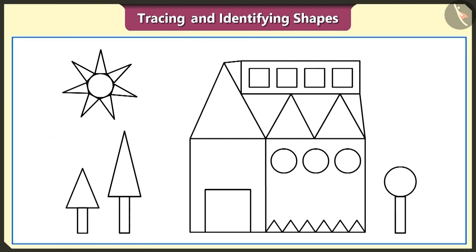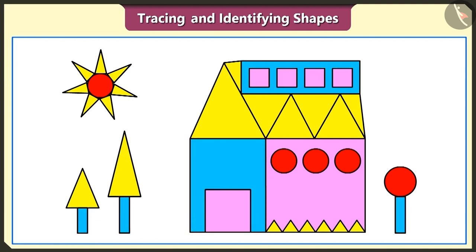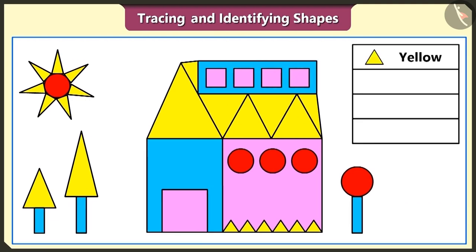Let's fill this figure with colors. First of all, we will fill all the triangles with yellow color. Now, we will fill in all the circles with red color. There are several square shapes in this figure — we will fill in the square shapes with pink color. Thumpkin, is there any shape yet to be filled? The rectangle shape. You are right — now, we will fill the rectangle shapes with sky blue color. We have filled the triangles with yellow, the circles with red, the squares with pink and the rectangles with sky blue color.